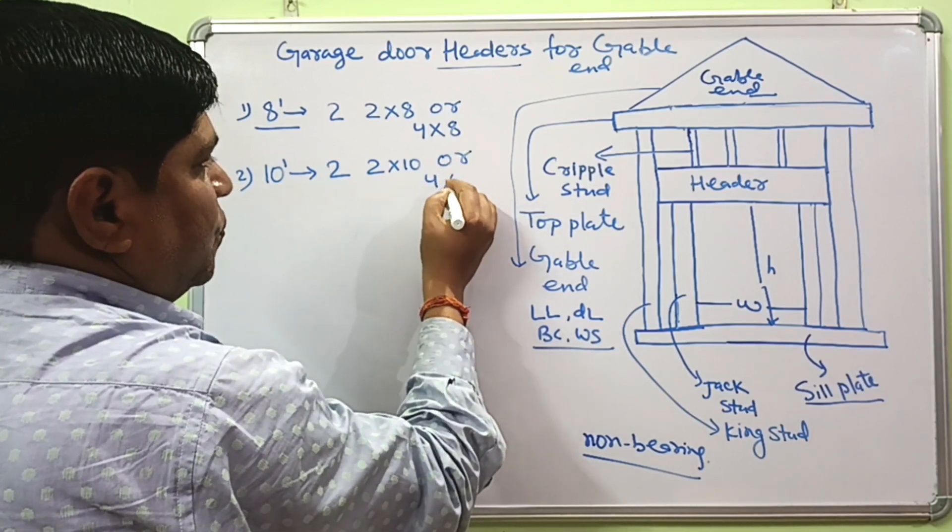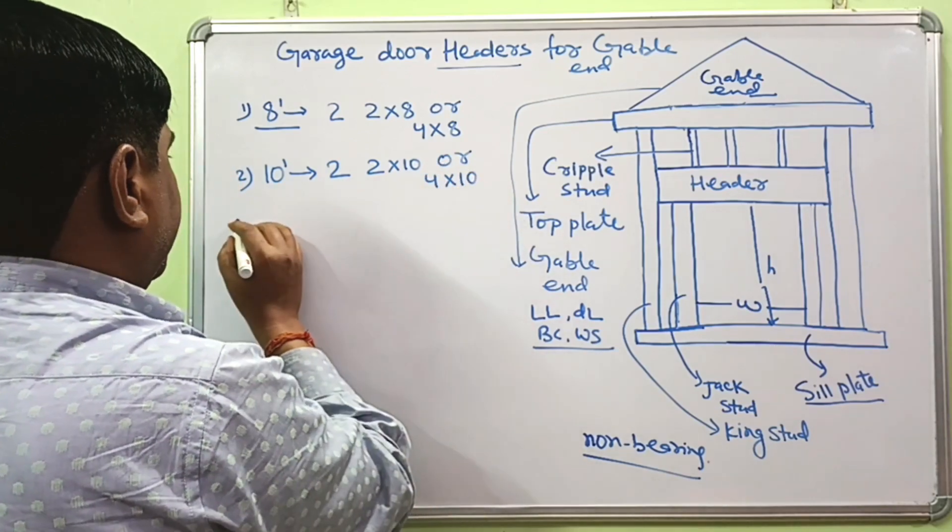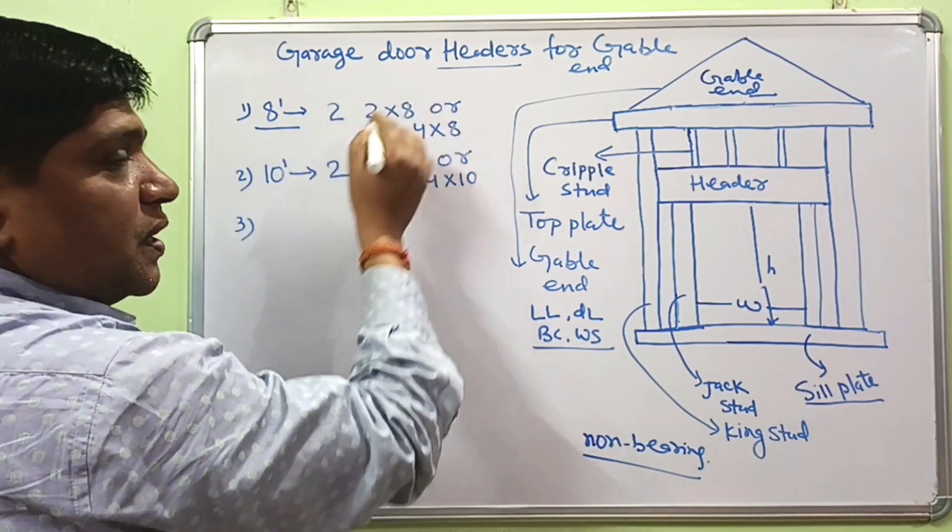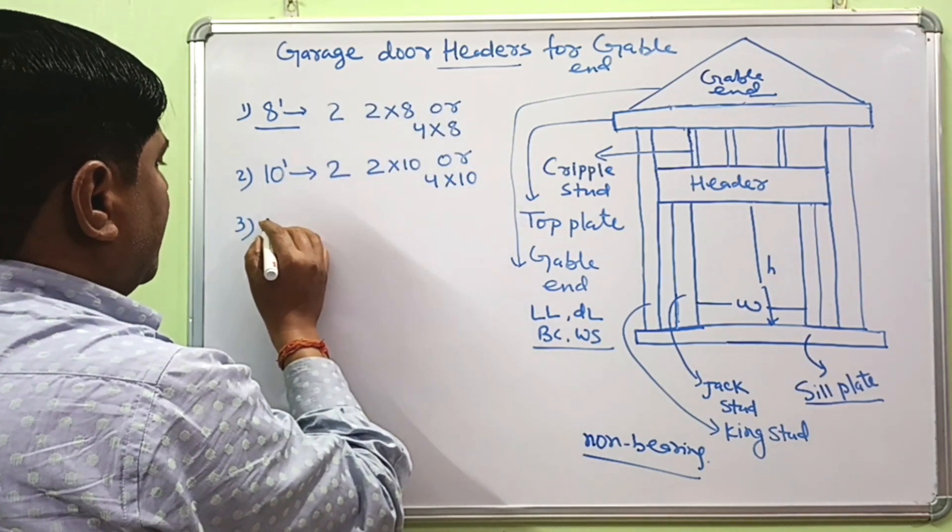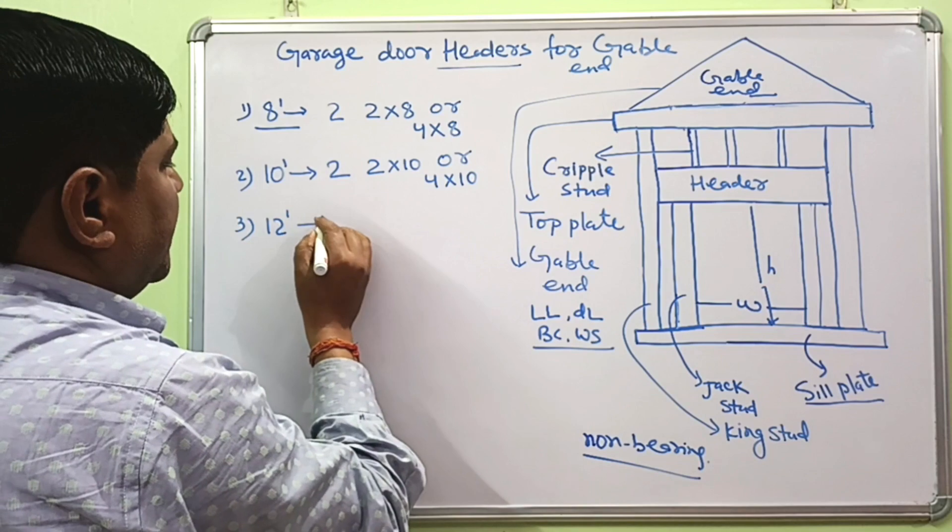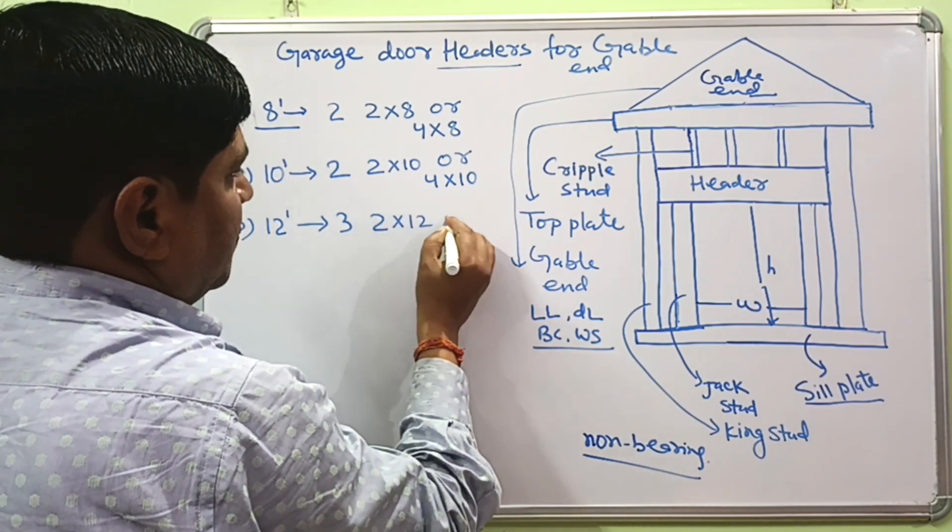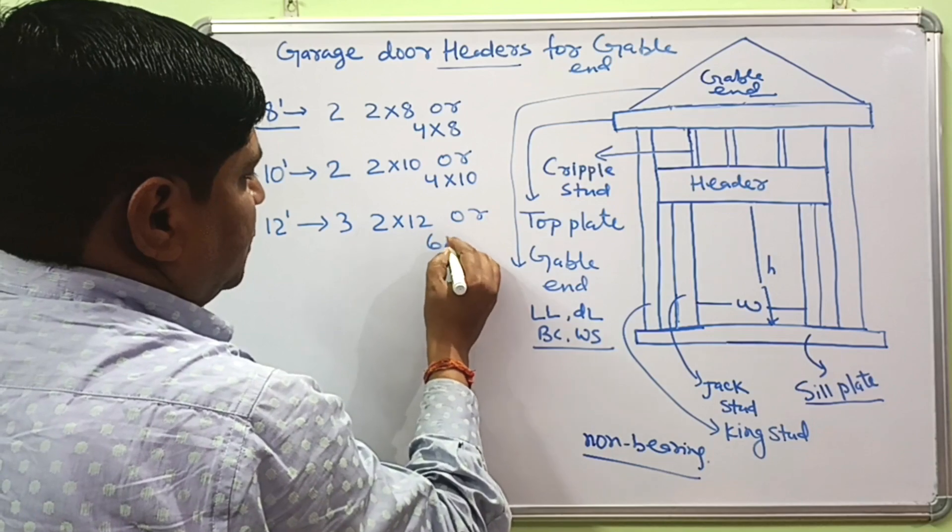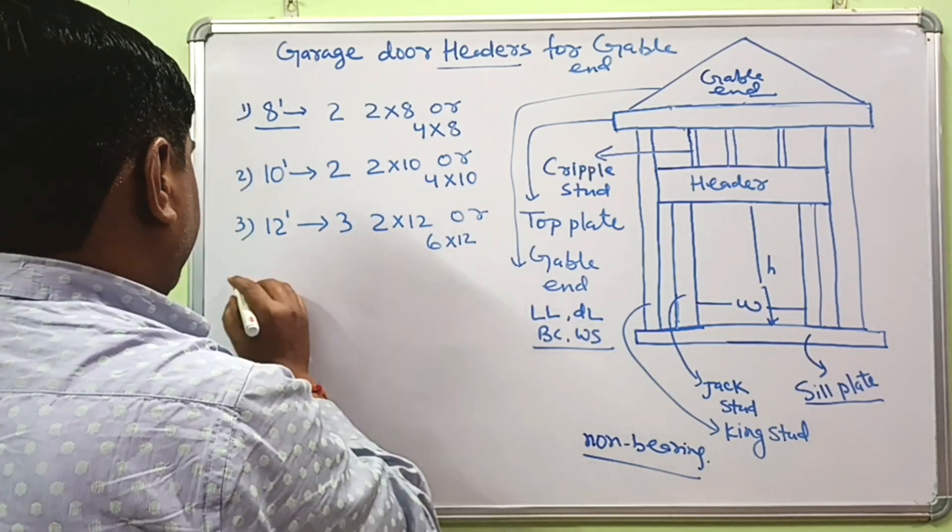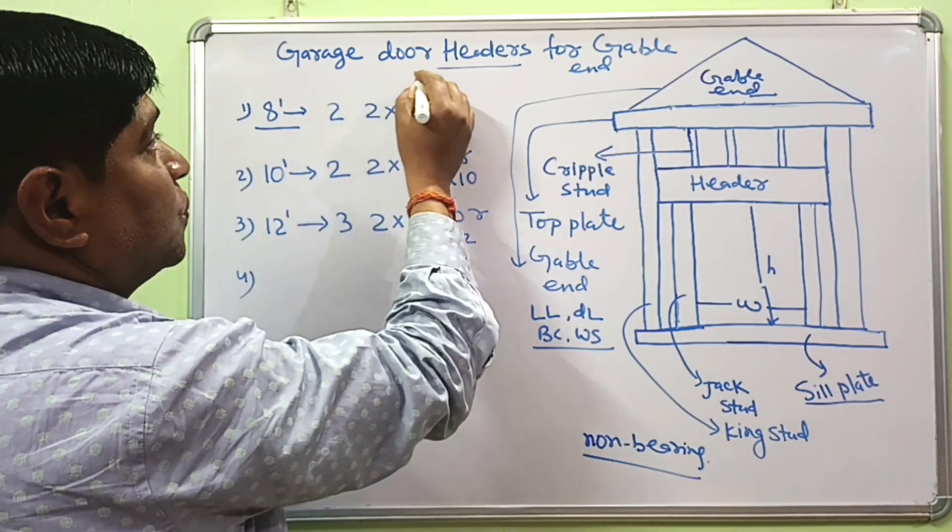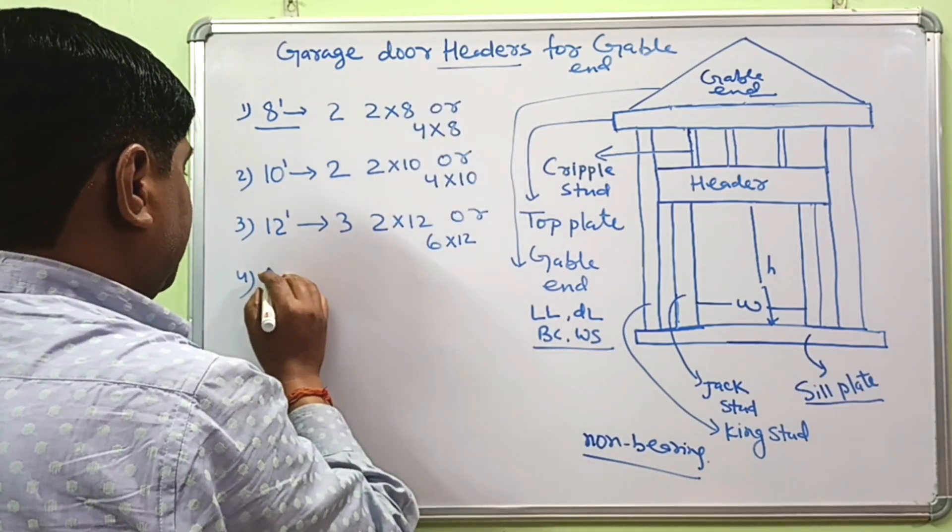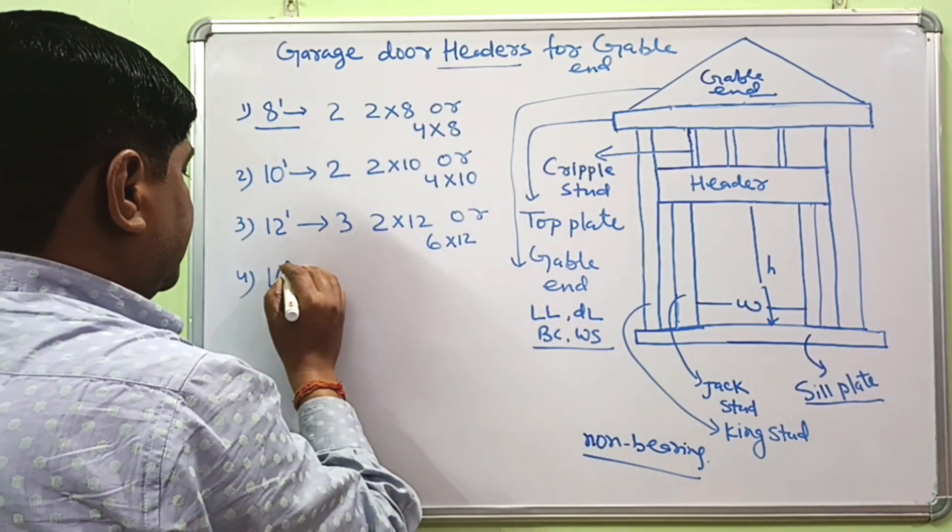If your garage door is about 12 foot opening, you can use triple 2 by 12 or 6 by 12 lumber.